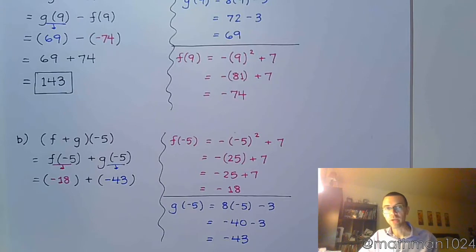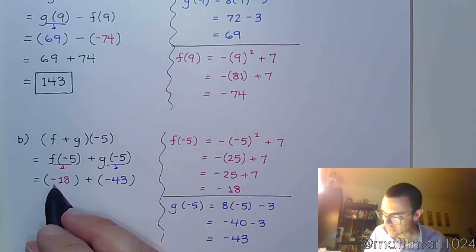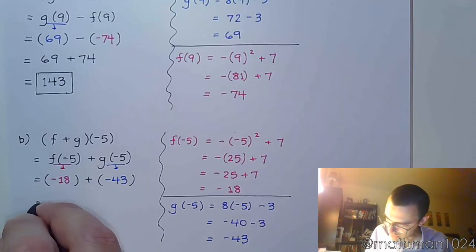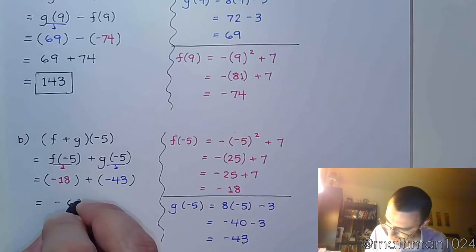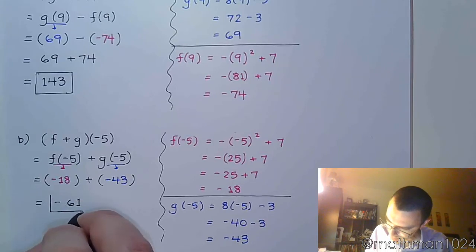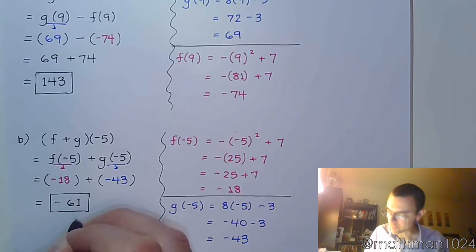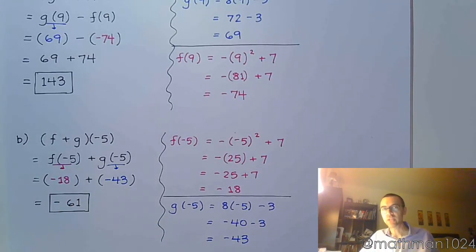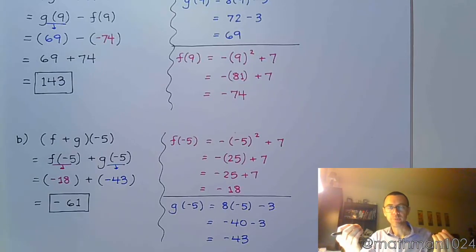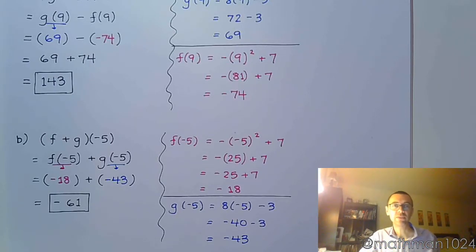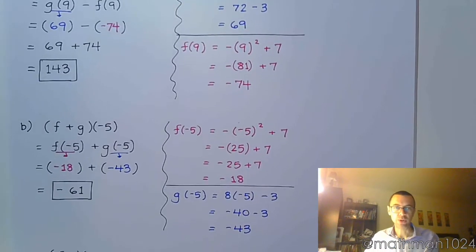f of negative 5, we find to be negative 18, and g of negative 5 is negative 43. And so now we do what it says, which is to add these guys together. Negative 18 and negative 43 gives me negative 61. So again, I can't emphasize this enough. Take those guys, separate them, and do them individually, and then bring them back together with whatever operation it says. In this case, it said addition. In the last problem, it said subtract.